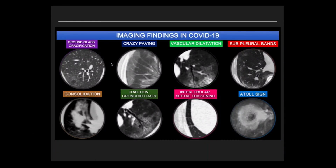To revise the imaging findings in COVID-19: ground glass opacity is the most common imaging finding on HRCT. Other findings include crazy paving pattern (ground glass with interlobular septal thickening), vascular dilatation, subpleural bands, consolidation, traction bronchiectasis, interlobular septal thickening, and the atoll sign — central ground glass opacity surrounded by denser consolidation.